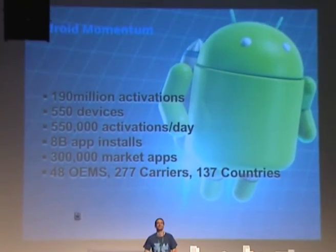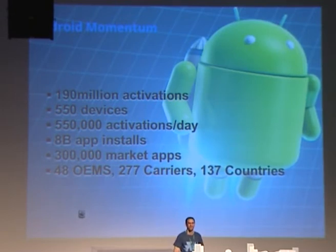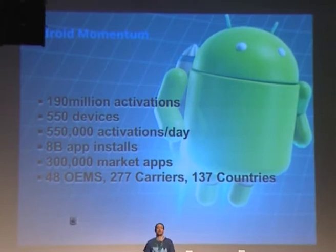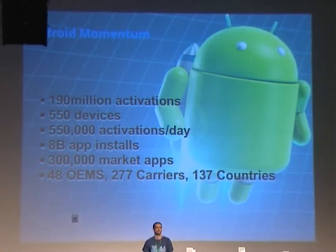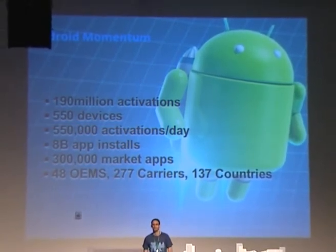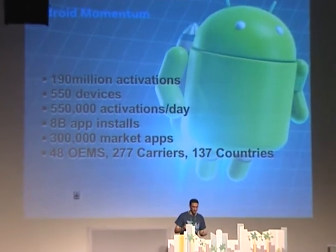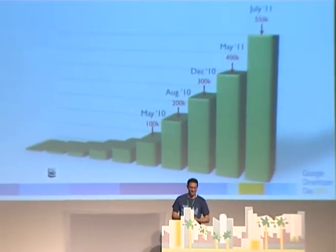We went from 100 million activations, and that grew — it clearly grew quite a lot. You saw in the keynote this morning we had some new figures: 190 million Android devices. That 190 million represents devices with the Android Market on — the Google experience devices, the devices that check in with our servers. 550 unique SKUs of devices from 48 OEMs, 277 carriers, in 137 countries, and 8 billion app installs to go along with it.